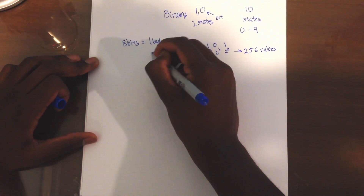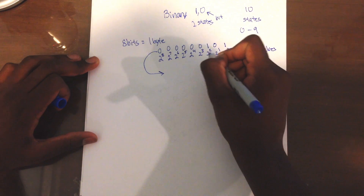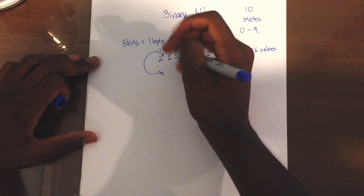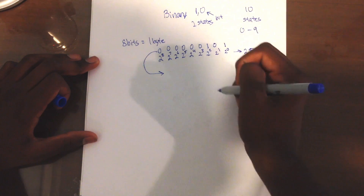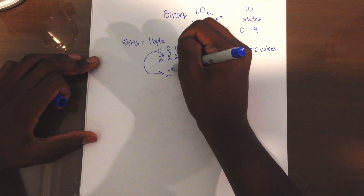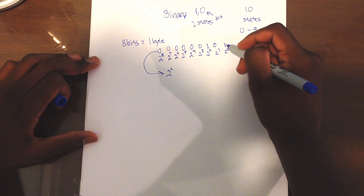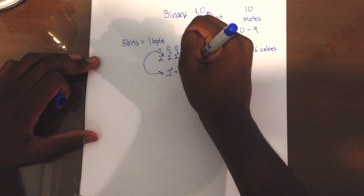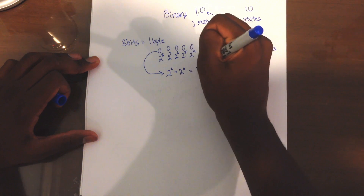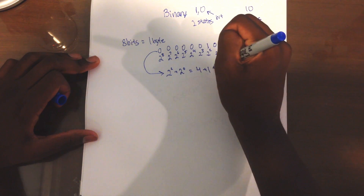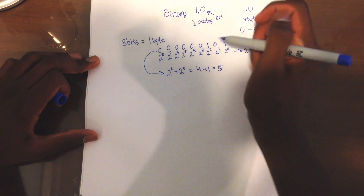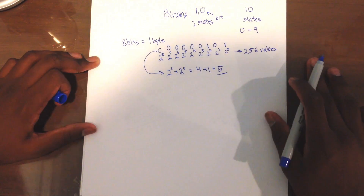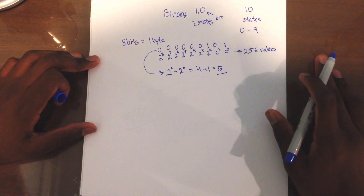Let's take this number. Since there is a 1 on top of 2 to the 2 — there's a 1 at the third bit — that means you count 2 to the 2. And there's also a 1 at 2 to the 0, so you add 2 to the 0. This equals 4 plus 1, which is 5. So this whole thing here is the number 5 in binary.